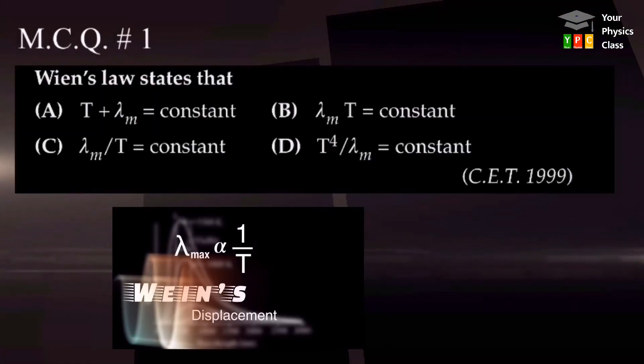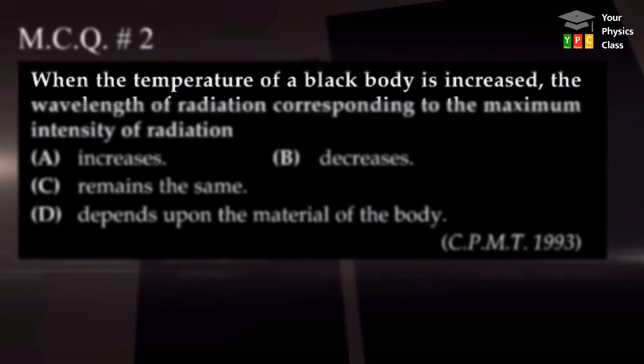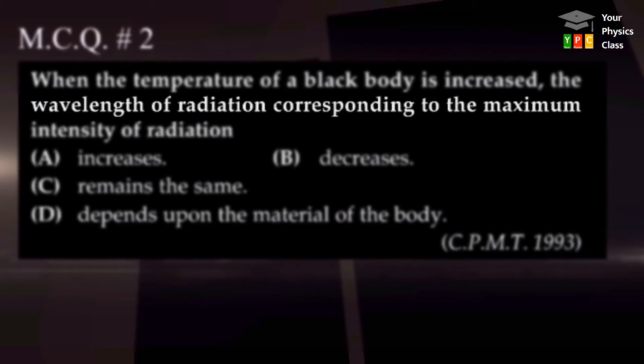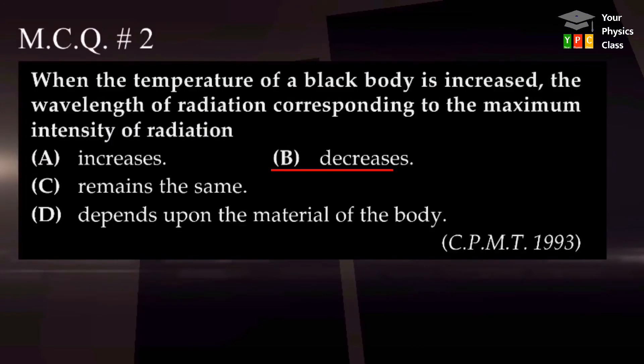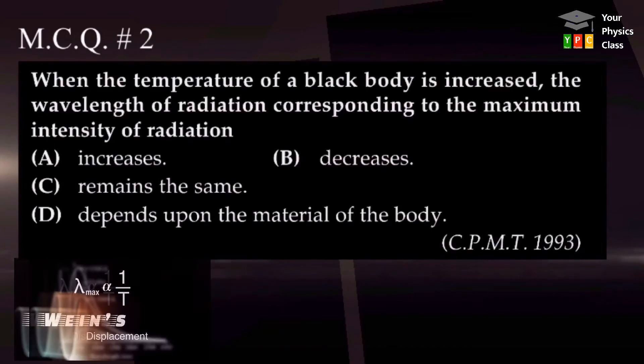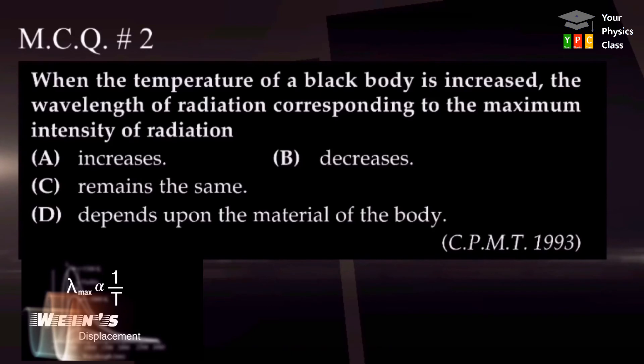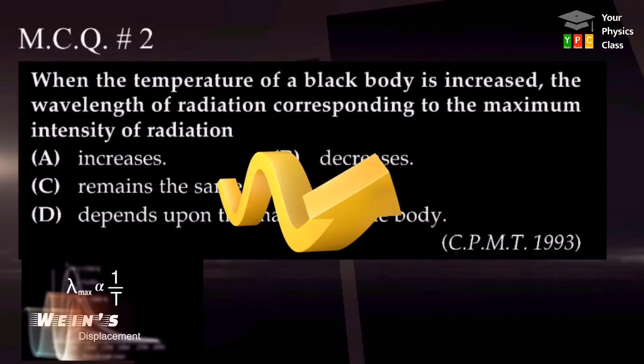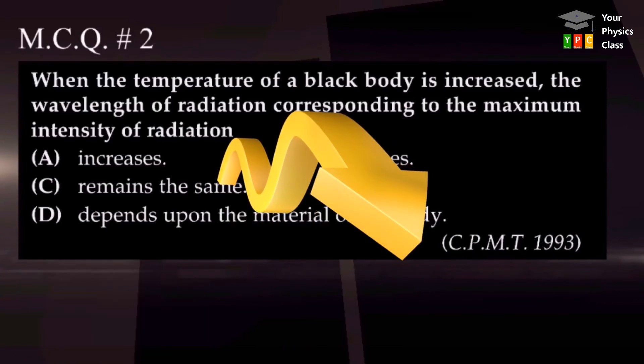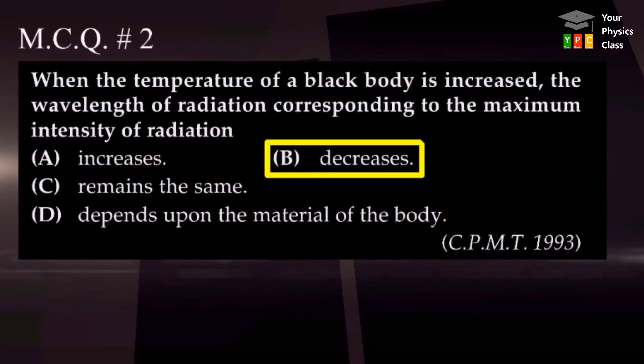Just recall the statement. You will get the answer. Yes, of course, B is the right answer. When temperature of the body is increased, the wavelength of radiation corresponding to maximum intensity of radiation will increase, decrease, remain the same, or depend upon the material of the body. What is your answer? Recall Wien's displacement law. According to the law, lambda max is inversely proportional to temperature. As temperature increases, lambda max decreases. Therefore, B must be the answer.